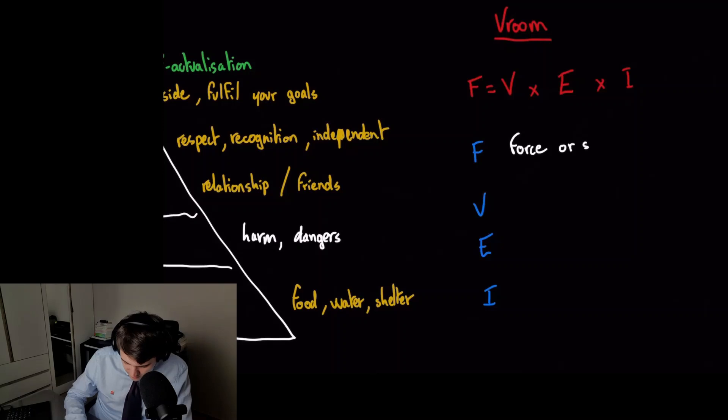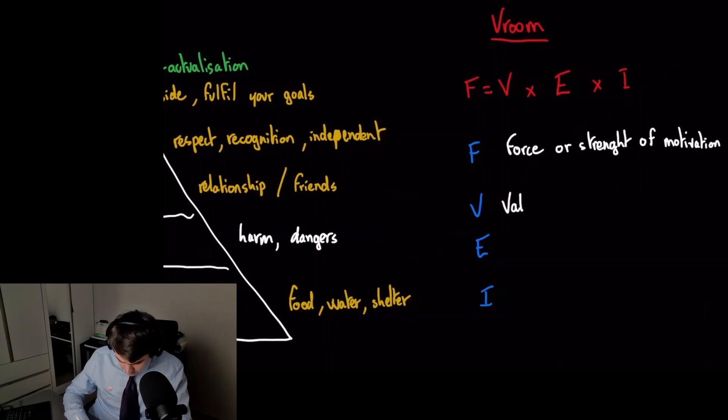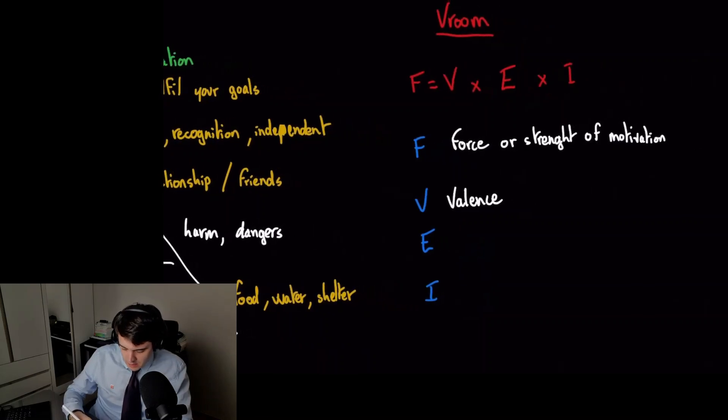That's what we want to look at, right? It's the number we are interested in, the actual motivation amount. That's why we start with F equals. Then the formula is V for valence, and valence is how much do you want something.